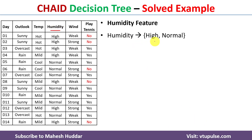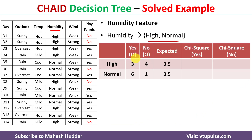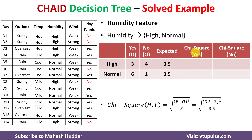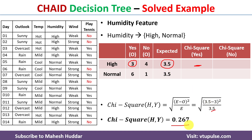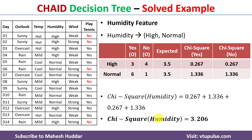Now the Humidity attribute, which has two possibilities: high and normal. The observed values are: humidity equals high gives 3 'yes' and 4 'no'; humidity equals normal gives 6 'yes' and 1 'no'. Expected values: (3 + 4) / 2 = 3.5 and (6 + 1) / 2 = 3.5. The chi-square for humidity equals high given 'yes' = sqrt((3.5 − 3)² / 3.5) = 0.267. Adding all chi-square values gives chi-square of Humidity = 3.206.